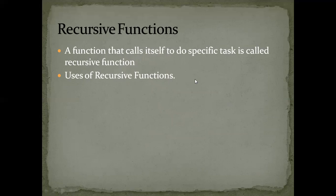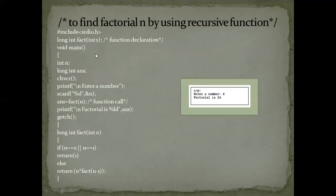We'll see an example to find the factorial of n using a recursive function. For example, 2 factorial is 2 into 1, that is 2. 4 factorial is 4 into 3 into 2 into 1, which is 24. Similarly, 5 factorial is 5 into 4 into 3 into 2 into 1.